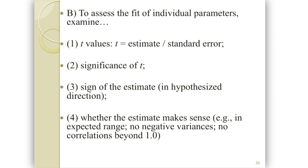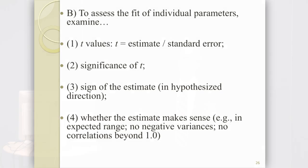Occasionally you'll see output with a variance term that's negative — theoretically impossible — or correlations bigger than one, which is also theoretically impossible, but these occur. You have to pay attention to the output to know that something is wrong.